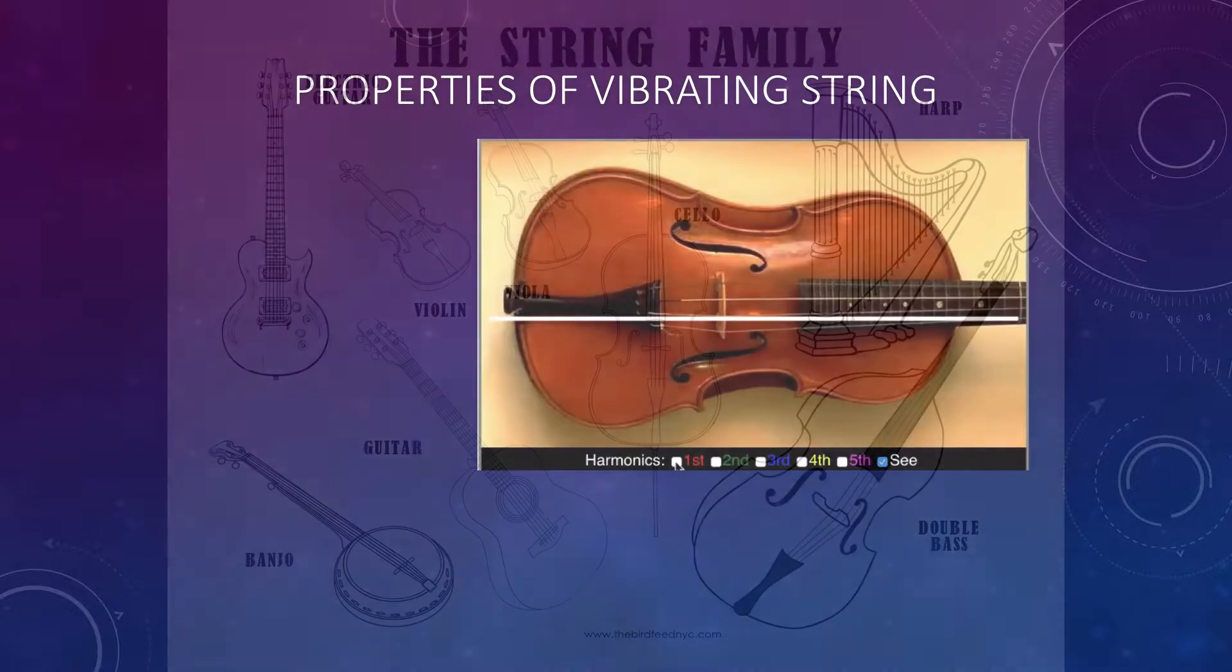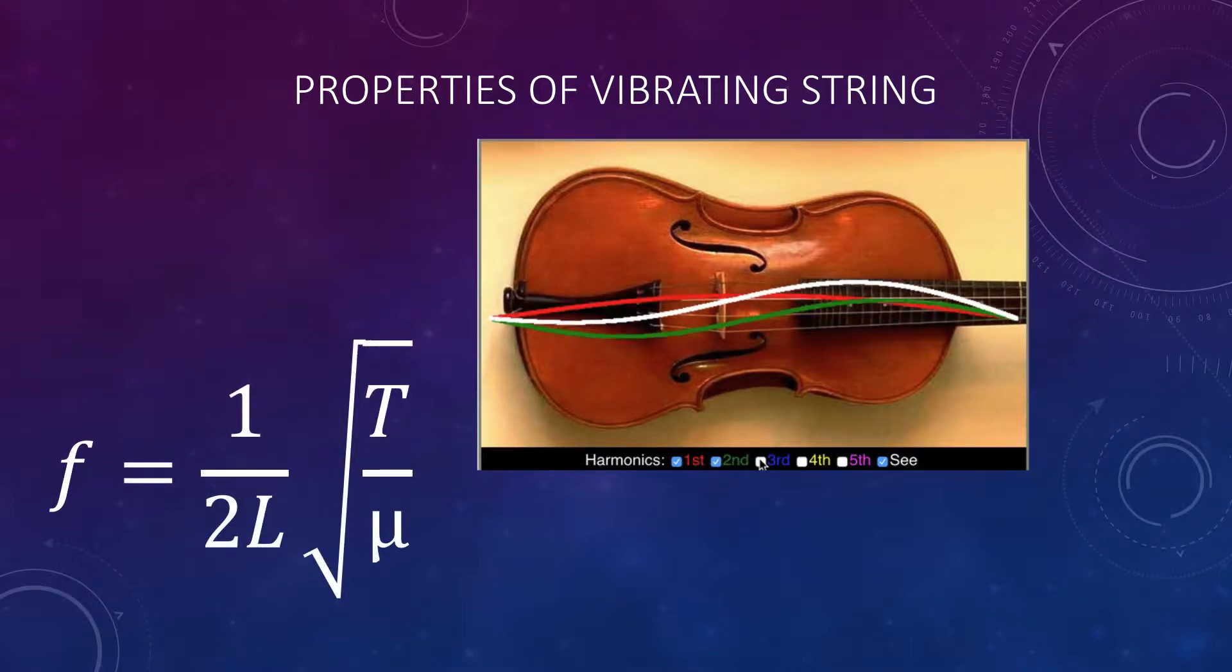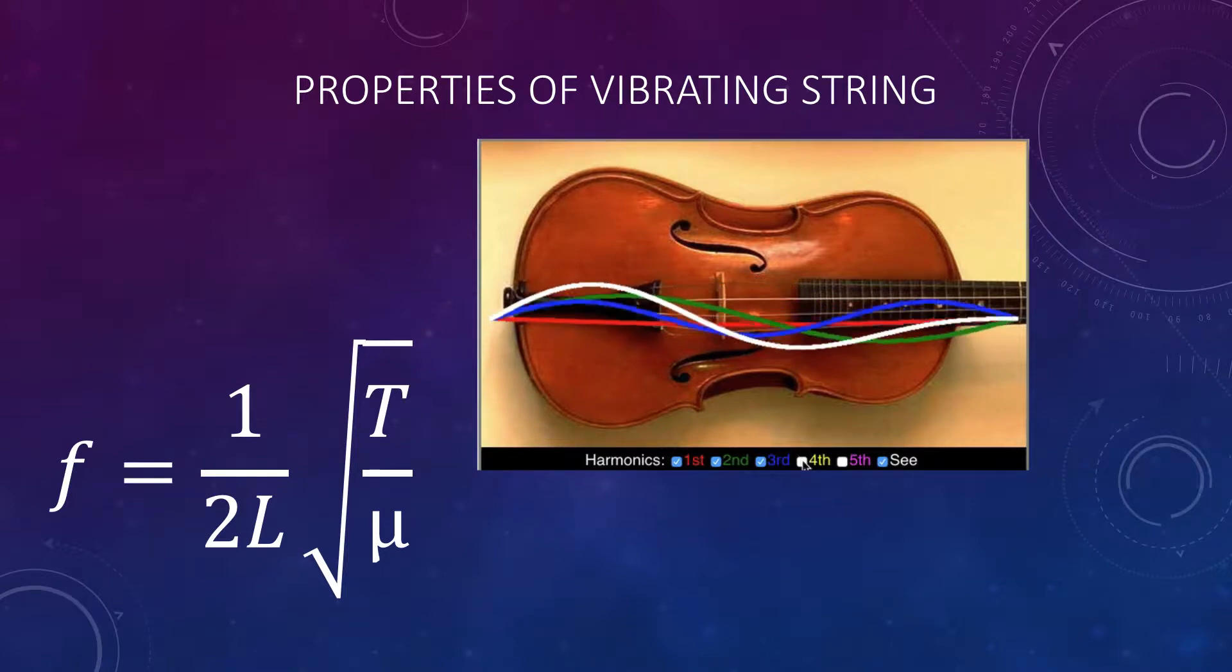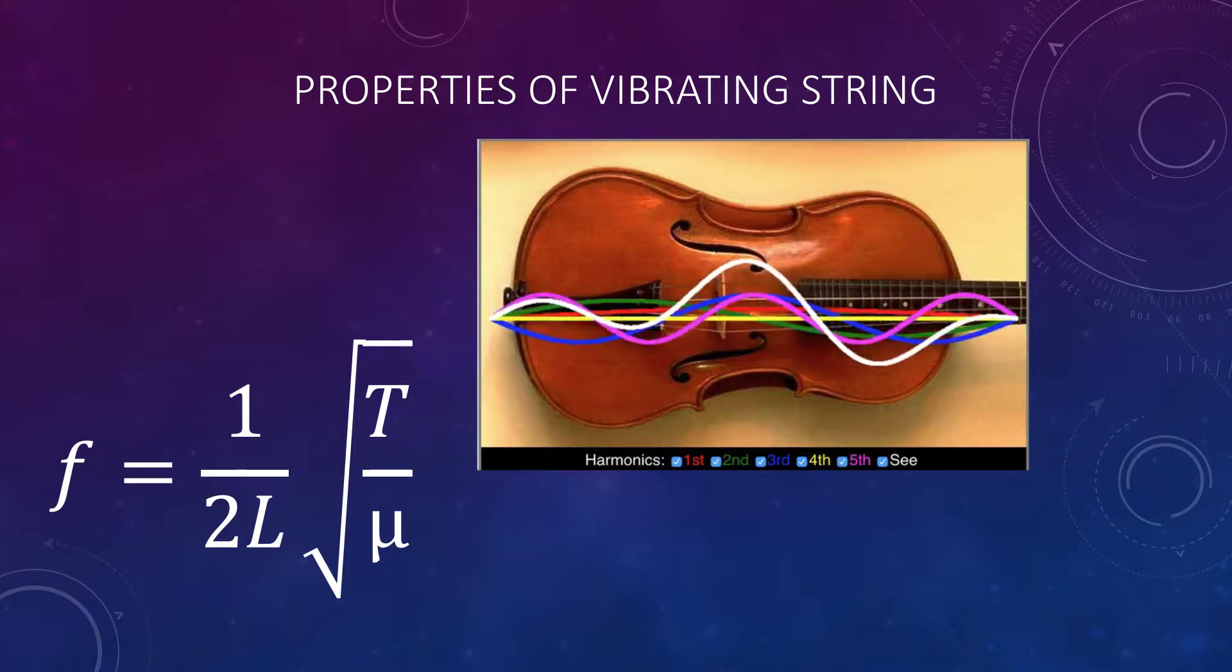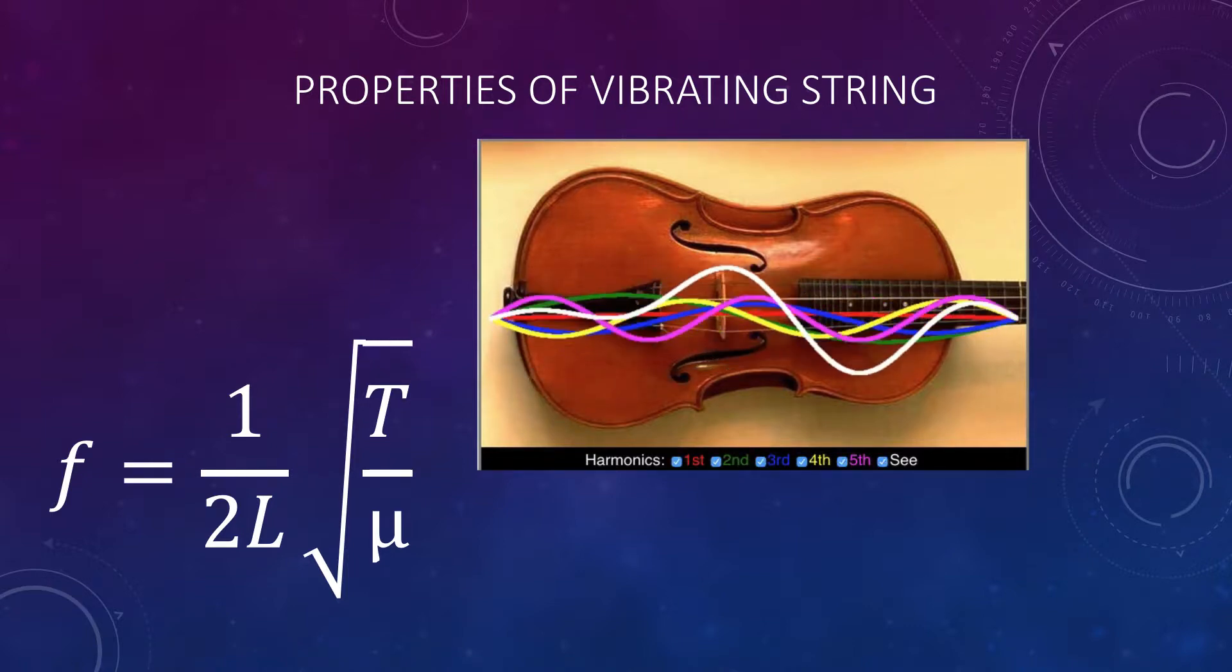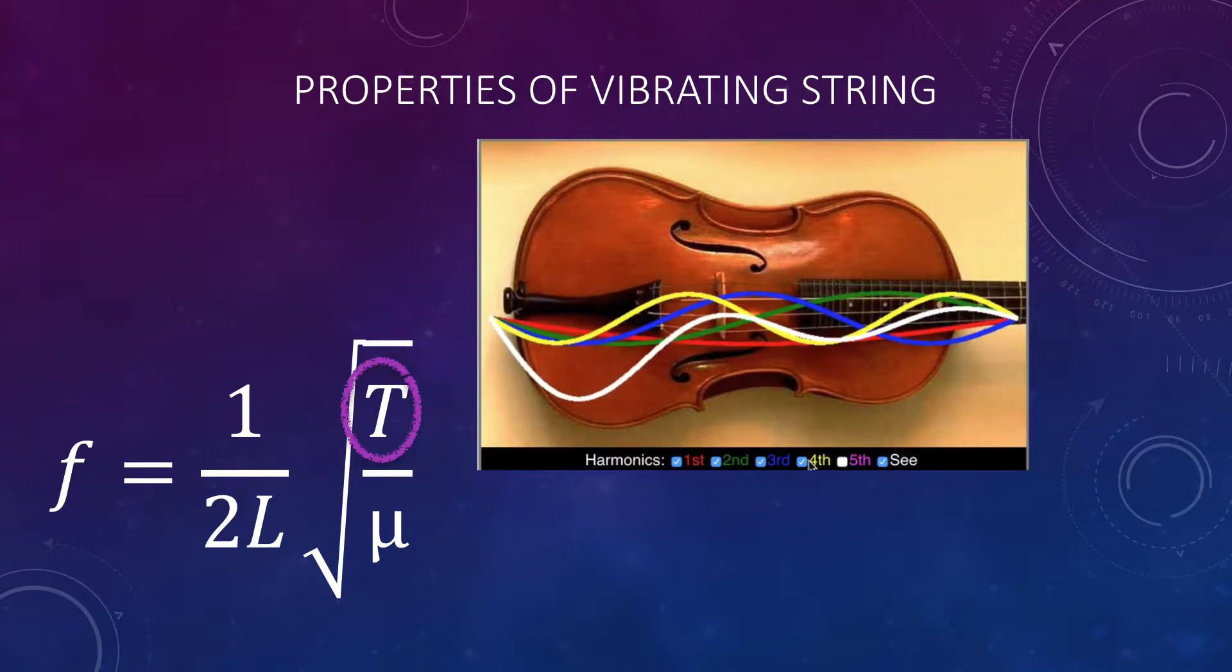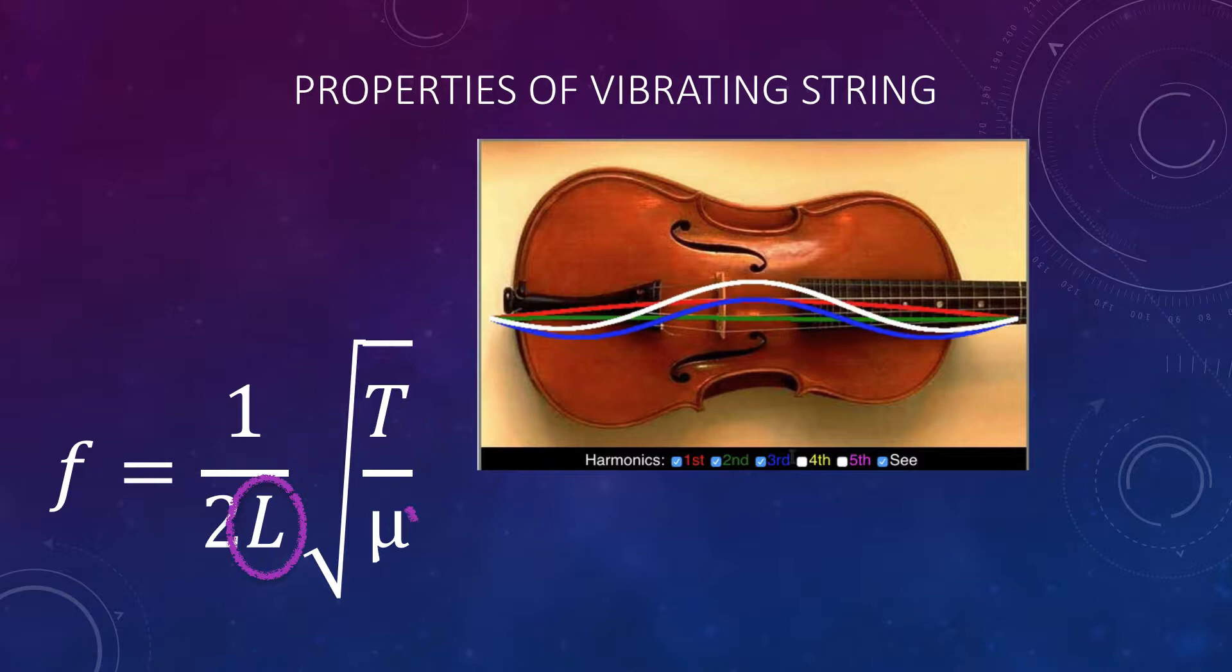You've already studied some of the properties of a vibrating string. You should recall that the frequency of a vibrating string is determined by its length, mass, and tension, and that the formula is f equals 1 over 2L times the square root of T over μ. So frequency is proportional to tension, and inversely proportional to length and linear mass density of the string.